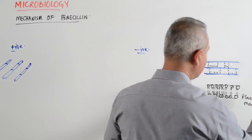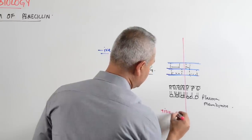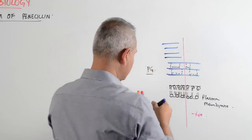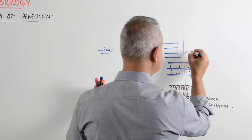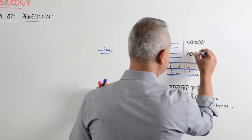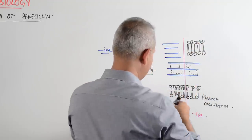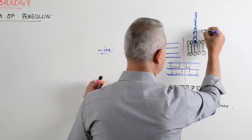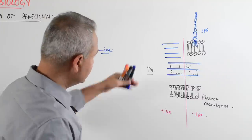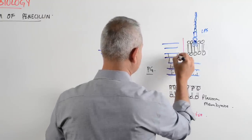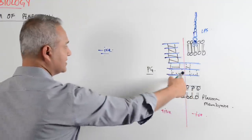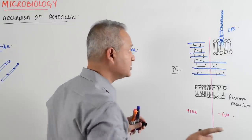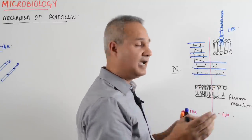On the gram positive side there are many more peptidoglycan layers. On the gram negative bacteria, there is a periplasmic space, and above that is another lipid bilayer with lipopolysaccharides (LPS). Let us first understand what these cross-linkages are, then see how penicillin blocks them, and also see why penicillin is not as effective on gram negative as it is on gram positive.